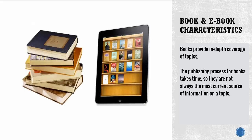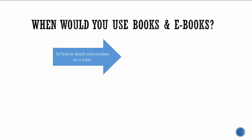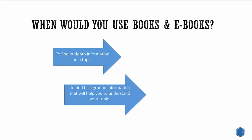Let's start with the characteristics of books and eBooks. Books provide in-depth coverage of topics. The publishing process for books takes time, so they're not always the most current source of information on a topic. Books are best used to find in-depth information on a topic, as well as background information that will help you understand your topic. They also help you find historical information.